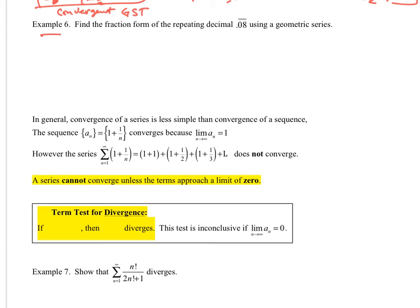Then example number six. Find the fraction form of the repeating decimal 0.08 using a geometric series. So if I take this 0.08 repeating, that's going to be 0.0808 and so on. And so this is going to be 0.08 plus 0.0008 plus 0.000008 and so on.